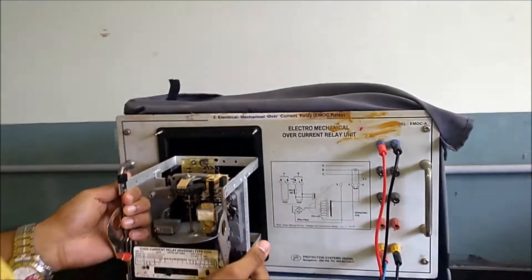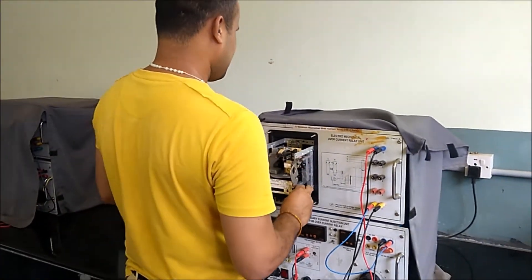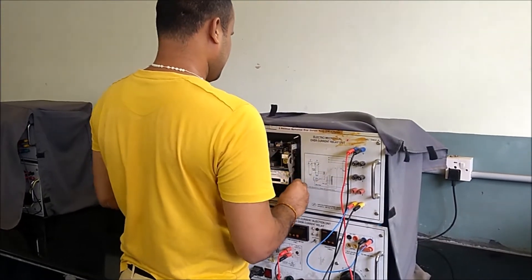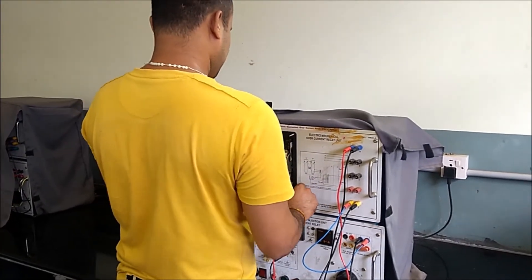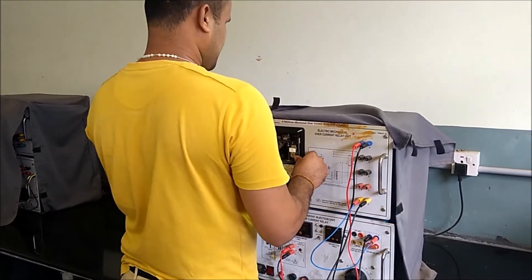Now we have set it to 1 amp, what we call the plug setting. Here whatever current which is more than 1 amp, the relay treats it as a fault current.